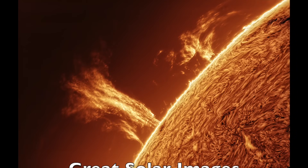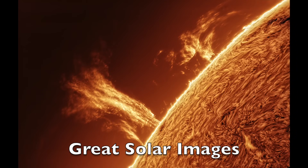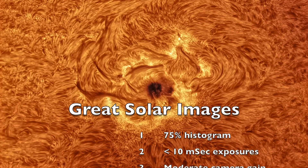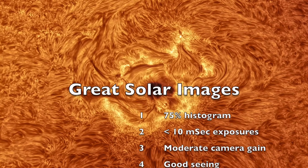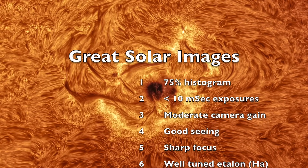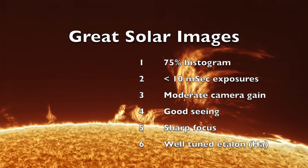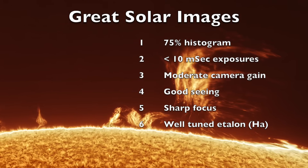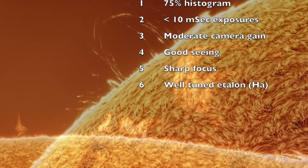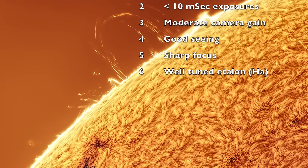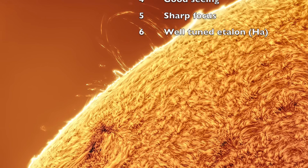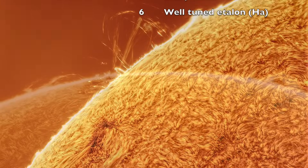Generally speaking, to get great solar images you need all of the following: one, a bright enough image for a 75% full histogram, which ensures plenty of data without overexposing; two, the ability to freeze seeing with 10-millisecond or less mono exposures so turbulence doesn't blur your image; three, being able to mitigate camera noise by not pushing the gain too high, which can create undesirable artifacts; four, calm air for decent to good seeing, meaning minimal atmospheric turbulence; five, good focus; and six, a properly tuned etalon.